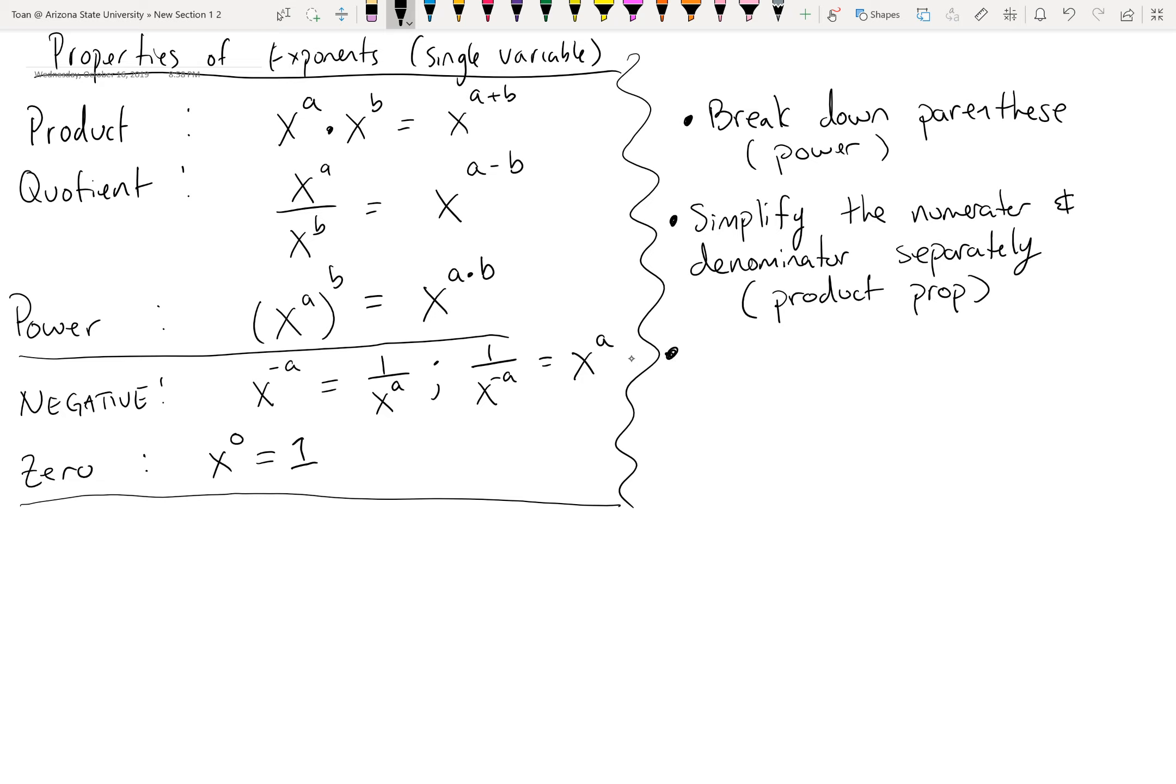Second is to simplify the numerator and denominator separately, and that's usually going to be the product property. Last, once you simplify the top and the bottom of a fraction as much as possible, you're going to apply the quotient property - the top exponent minus the bottom exponent business.